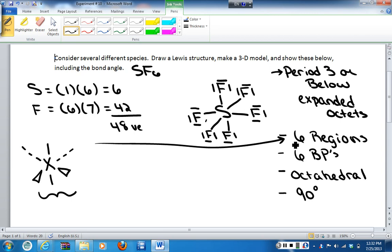If it's got 6 regions of electron density, it doesn't matter if it's 6 bonding pairs, it doesn't matter if it's 5 bonding pairs and 1 lone pair, any combination. If you've got 6 regions, this is always going to be the general structure.